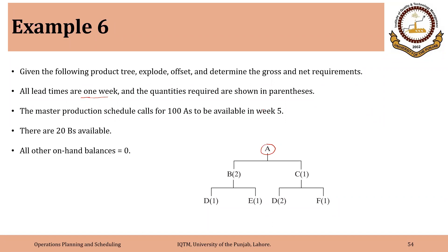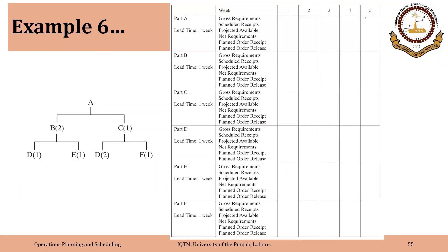The master production schedule calls for 100 units of A to be available in week 5. There are 20 Bs available and all other on-hand balances are zero. We need two Bs to make one A, one D and one E to make one B, one C to make one A, and two Ds and one F to make one C.